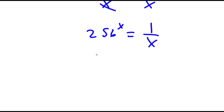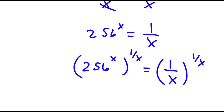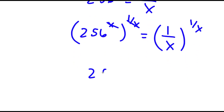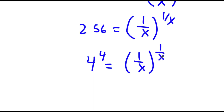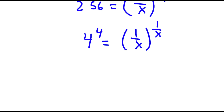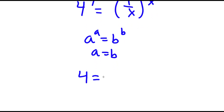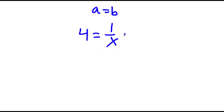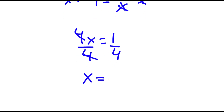Taking the power of 1 over x on both sides: 256 to the power of x, to the power of 1 over x, equals 1 over x, to the power of 1 over x. The x and 1 over x cancel, leaving 256 equals 1 over x, to the power of 1 over x. Now 256 is the same as 4 to the power of 4. So 4 to the 4th equals 1 over x to the power of 1 over x. If a to the a equals b to the b, then a equals b, so 4 equals 1 over x, giving 4x equals 1, and x equals 1/4.